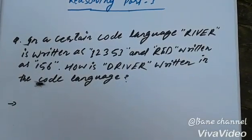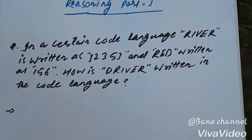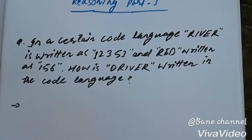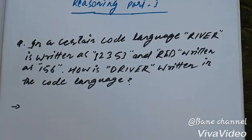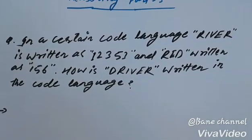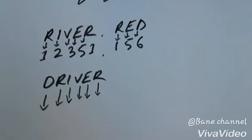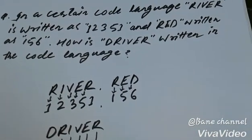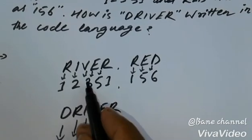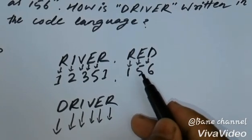In a certain code language, RIVER is written as 1, 2, 3, 5, 1 and RED is written as 1, 5, 6. How is DRIVER written in the code language? So RIVER equals 1, 2, 3, 5, 1. We've taken R equals 1, I equals 2, V equals 5, E equals 3, and R equals 1.